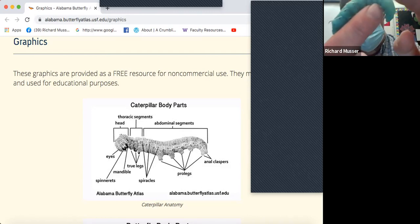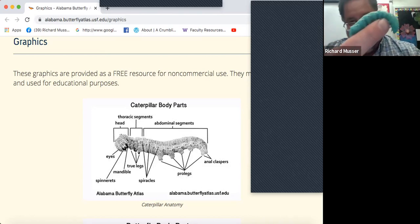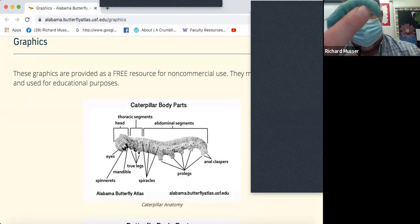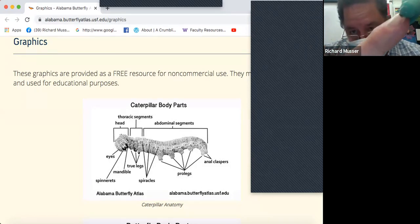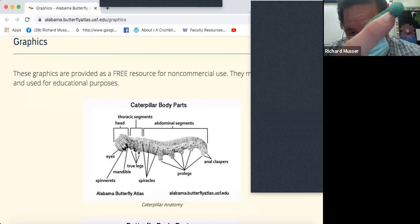The true legs are found on the thorax. You can look at this diagram in the picture here. This is the thorax segment. This is the head region up here. You can see the mandibles for chewing and the eyes are just little pin-like structures that provide information on light.